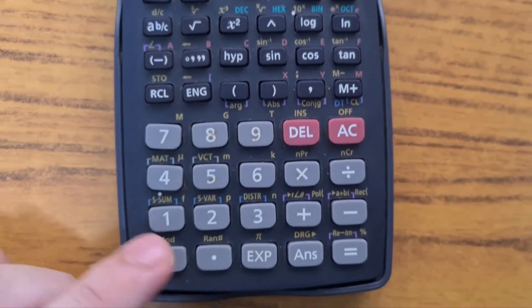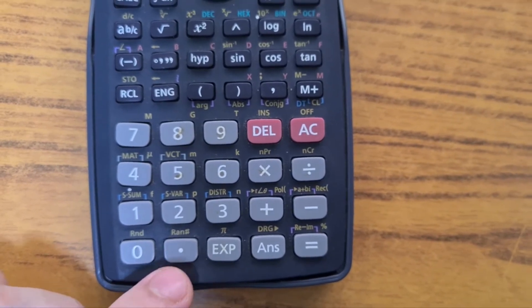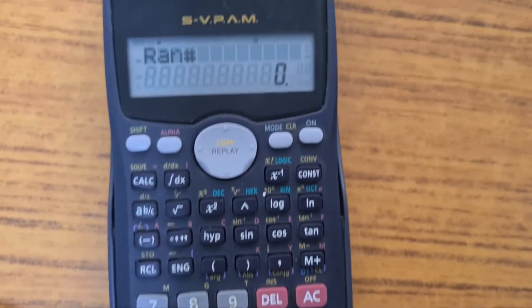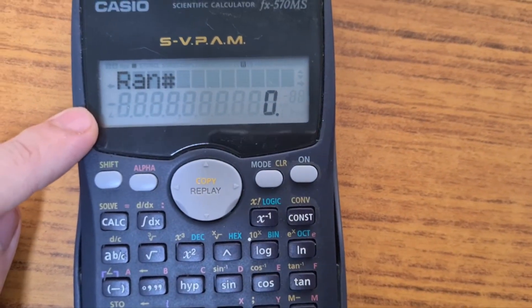After that, if you look at the bottom of the calculator, there's the RAN hex button. Press this, and you will get RAN hex shown on the screen.